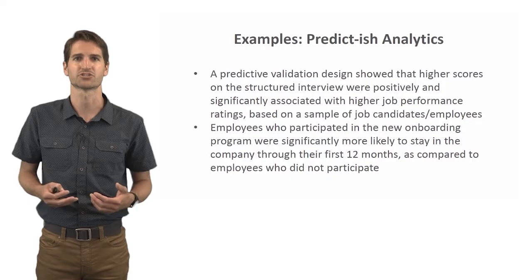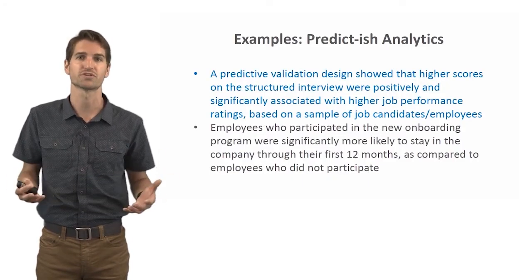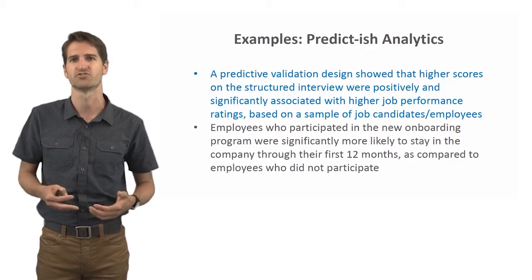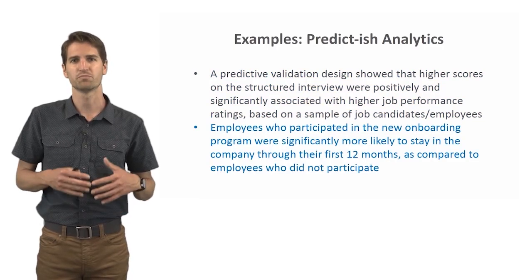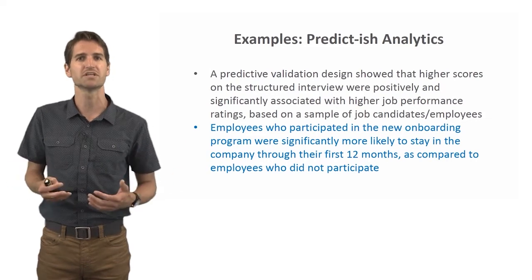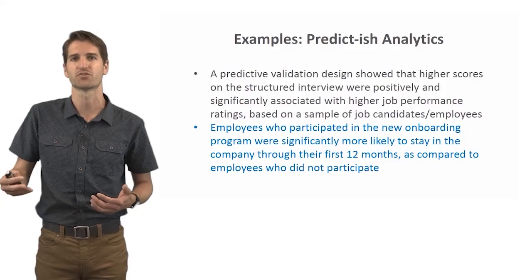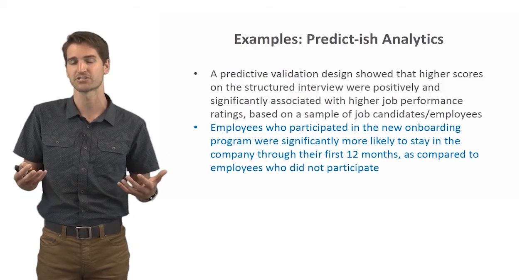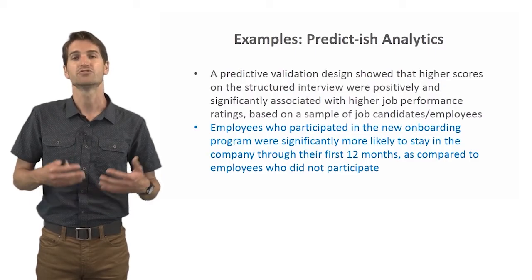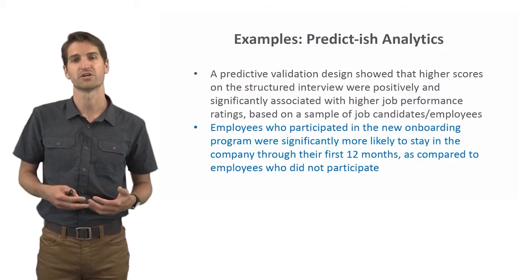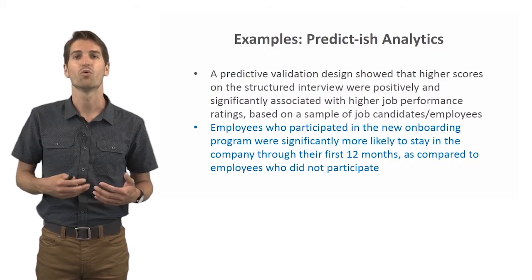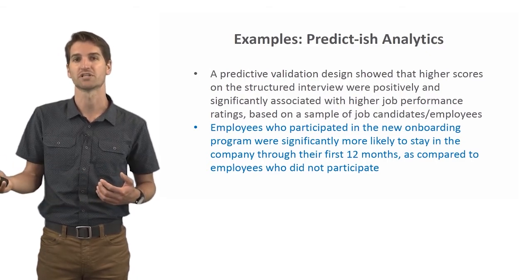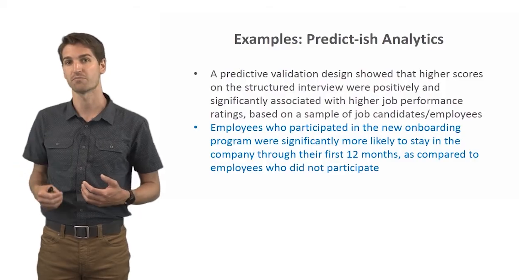Some examples of predict-ish analytics: a predictive validation design that showed higher scores on a structured interview component were positively and significantly associated with higher job performance ratings, based on a sample of candidates. Another example: employees who participated in a new onboarding program were significantly more likely to stay through their first 12 months versus those who did not participate. This could use an independent samples t-test to derive a p-value for significance, and Cohen's d for practical significance — measuring the magnitude of the effect of the onboarding program on retention.